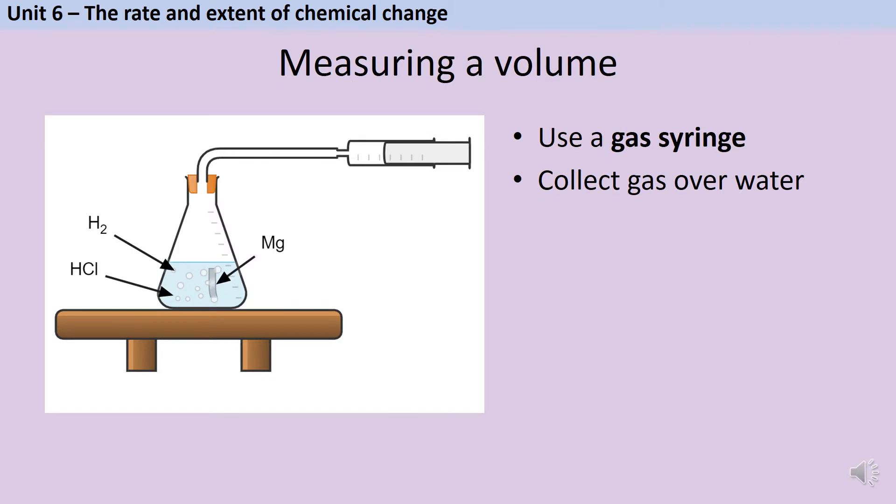We're now going to look at how you can actually get that data. You'll meet many reactions within GCSE chemistry that produce a gas, and we can measure the rate of these reactions by collecting the gas, seeing what the volume is, and measuring this over time to calculate the rate.